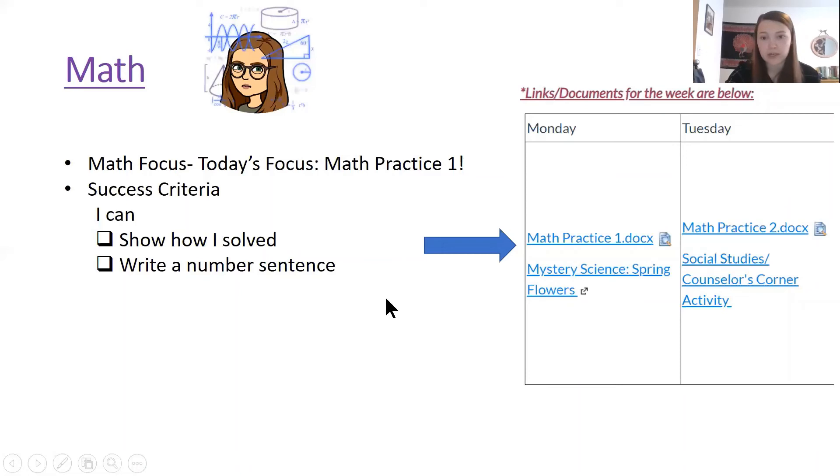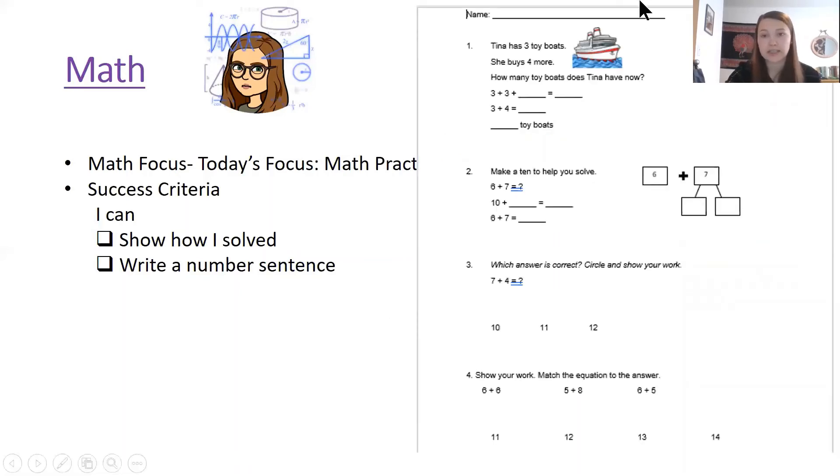And when you click on that you'll get a document that looks like this with four math problems on it and all of these problems today are addition problems. So in our first problem you'll use a doubles plus one strategy to solve. In our second problem you'll make a 10 to solve. And in our third problem you can use any strategy that you want as long as you show how you solved and circle the correct answer. And finally in number four there's three addition problems and you just need to draw a line from the addition problem to the answer.